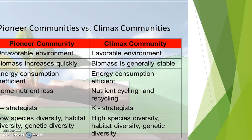Pioneer community versus climax community: in pioneer community, the environment is unfavorable; in climax community, environmental conditions are favorable. Pioneer community biomass increases quickly; in climax, biomass is generally stable. Energy consumption is inefficient in pioneer community but efficient in climax. There is nutrient loss in pioneer community, but in climax community, nutrient cycling and recycling occurs. Pioneer community follows R-selected strategy, while climax community follows K strategy.